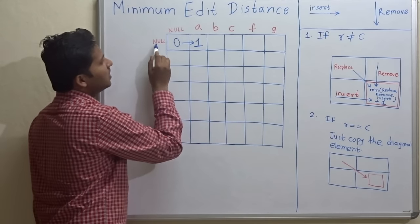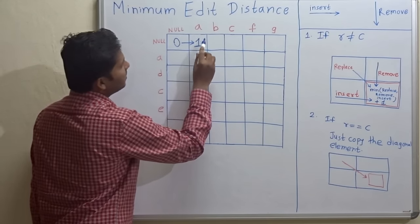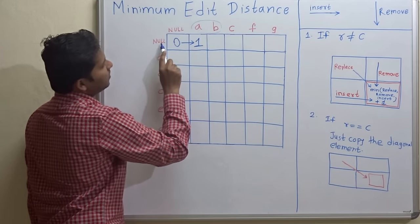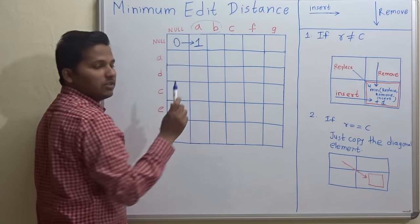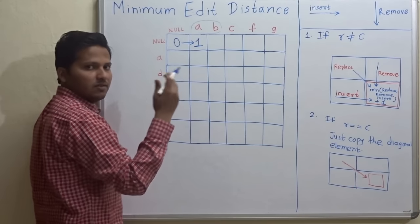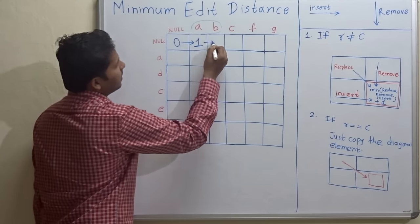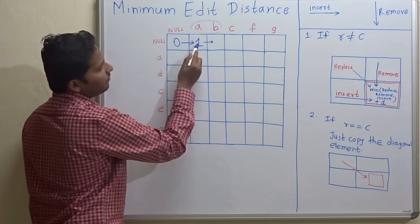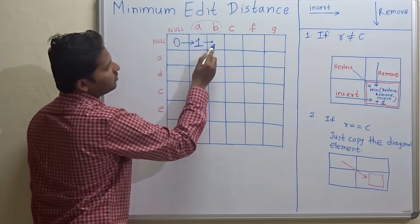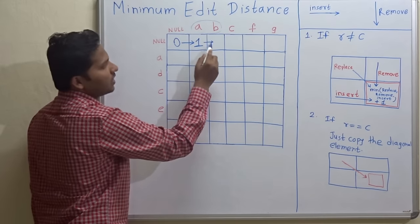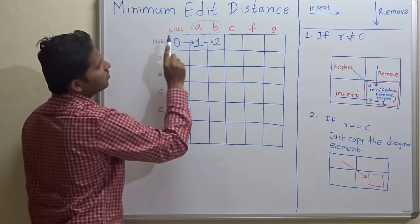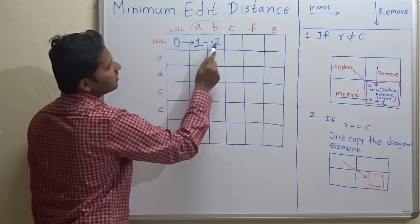If you have a null string and you want to convert it into string 'ab', you need two operations — inserting 'a' and inserting 'b'. Till this cell we have inserted 'a' — one operation — and for the next cell we insert 'b', so that's one extra operation. One plus one, total operations are two. For converting null into string 'ab', we have to perform two insert operations.